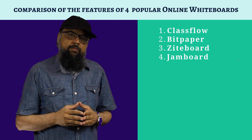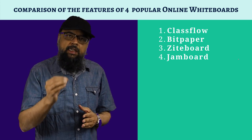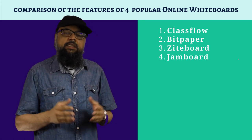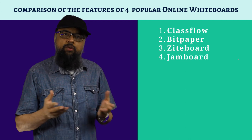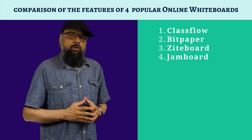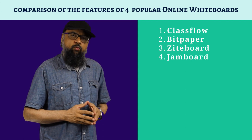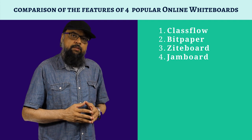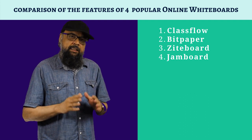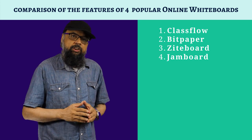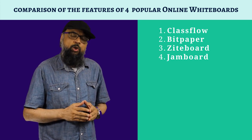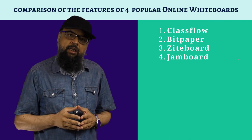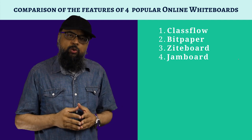In this video, we are going to discuss what are some of the critical or basic features a whiteboard application must have, and then what are some of the desirable features which we may or may not have. During this video, I will be comparing four online digital whiteboard applications: Jamboard, Ziteboard, ClassFlow, and Bitpaper. I will compare these applications on the basis of those features, and this video will help you in choosing the best digital online whiteboard for your particular application.